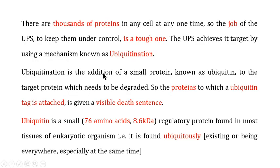In human cells there are thousands of proteins present at any given time, so the job of the UPS to keep them under control is a tough one. The UPS system has to identify only those particular proteins which are not needed by the cell at that particular time and degrade them, while leaving the proteins that the cell still needs. The UPS achieves its target by a mechanism known as ubiquitination.